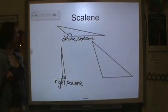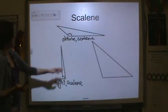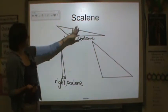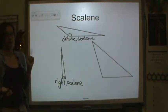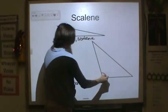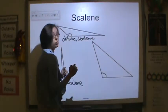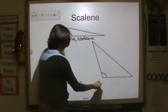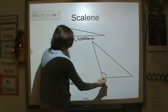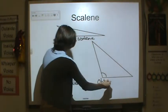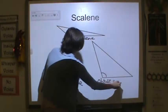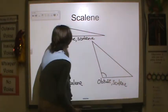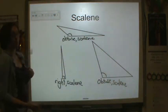It's both — it has an obtuse angle and none of the sides are the same length. Here's another obtuse angle greater than 90 degrees, so you have another obtuse scalene triangle. It is both.